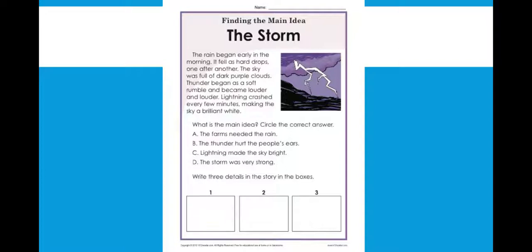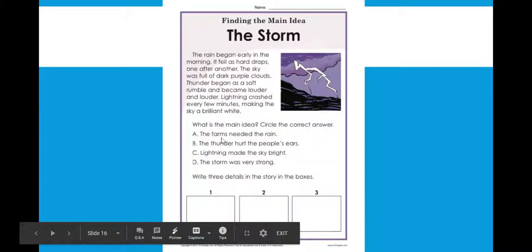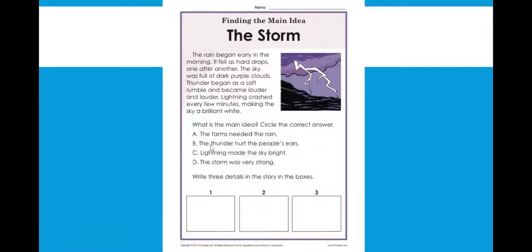So now that we know the subject, we need to dive deeper into what the main idea is. So looking at our answer choices down here. Is it A, the farms needed the rain? B, the thunder hurt the people's ears? C, lightning made the sky bright? Or D, the storm was very strong?